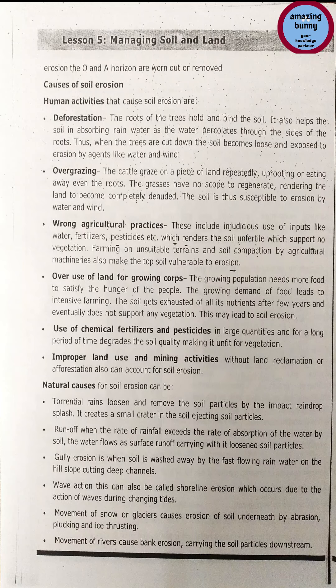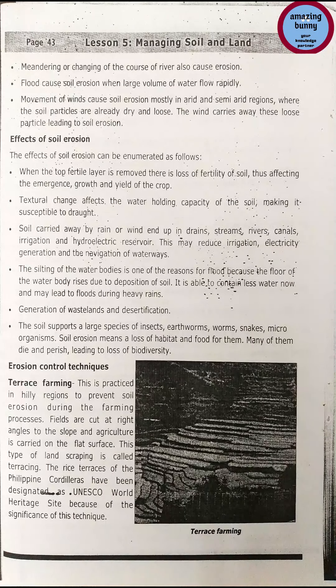Shoreline erosion occurs due to the action of waves during changing tides. Movement of snow or glaciers causes erosion of soil underneath by abrasion, plucking and ice thrusting. Movement of rivers causes bank erosion. Floods cause soil erosion when large volumes of water flow rapidly. Movement of winds causes soil erosion mostly in arid and semi-arid regions where soil particles are already dry and loose, and the wind carries away these loose particles.